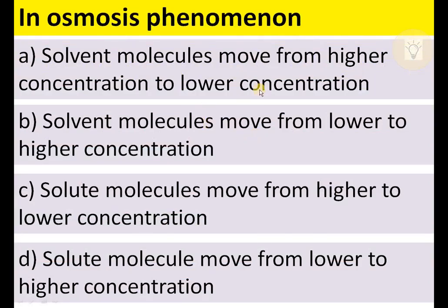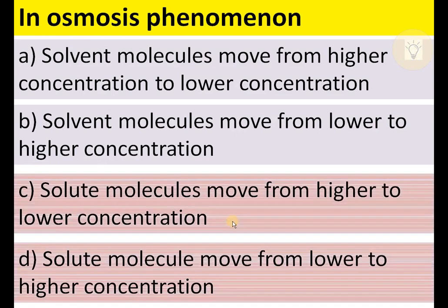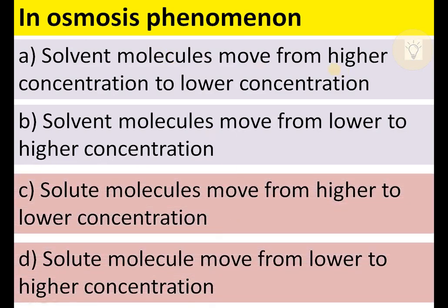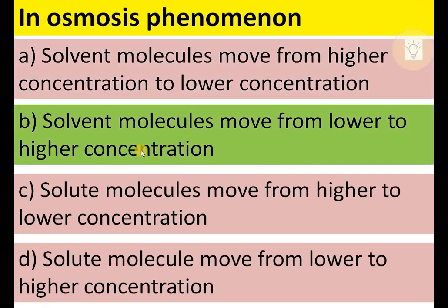In osmosis, solvent molecules move from higher concentration to lower concentration, lower to higher concentration, solute molecules move from higher to lower, or lower to higher. Solute molecules do not move, so C and D are eliminated. The correct answer is: solvent molecules move from lower to higher concentration.